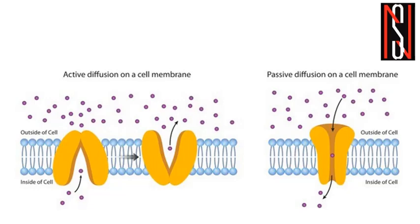Both active and passive transport are main biological processes that play an important role in supplying nutrients, water, oxygen, and other essential molecules to cells, and also in removing waste products. Both work for the same cause but with different movement directions. Active transport requires chemical energy because it moves biochemicals from areas of low to high concentration, whereas passive transport moves biochemicals from high to low concentration and does not require any energy.